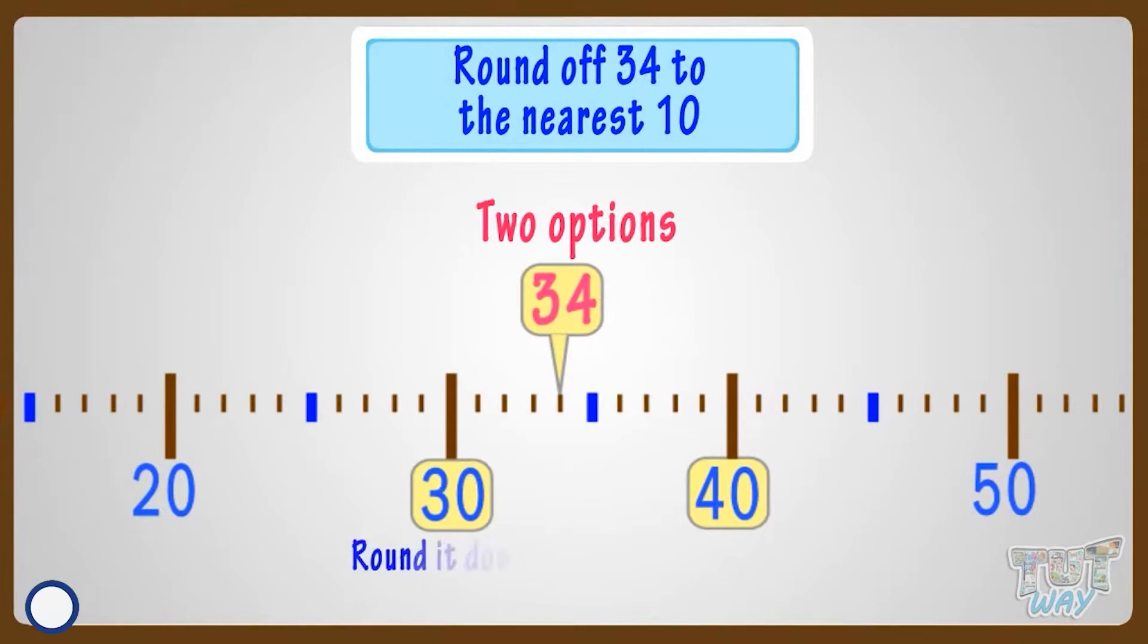Either we round it down or round it up. Also, we learned that if the number is below 5 mark, we round it down or else we round it up.